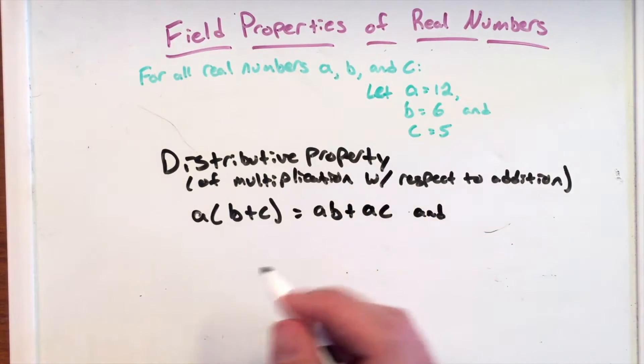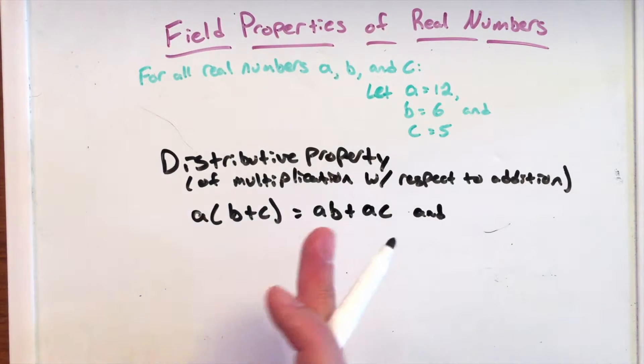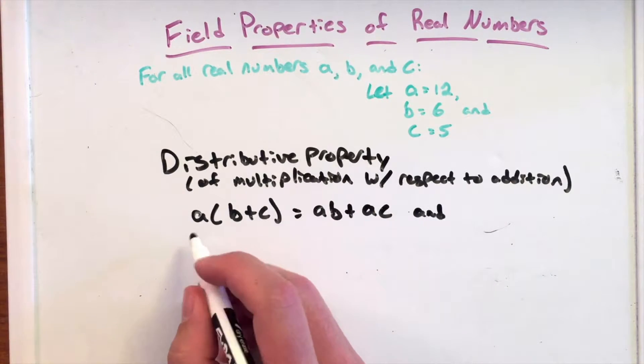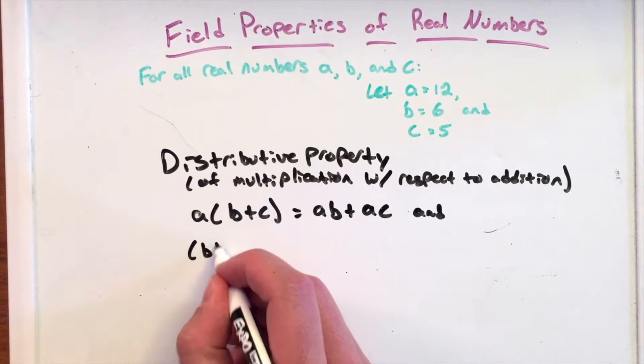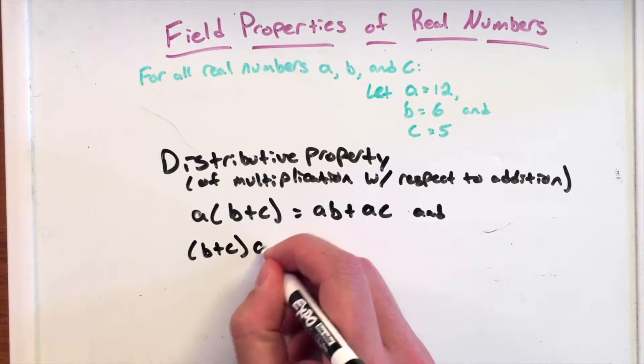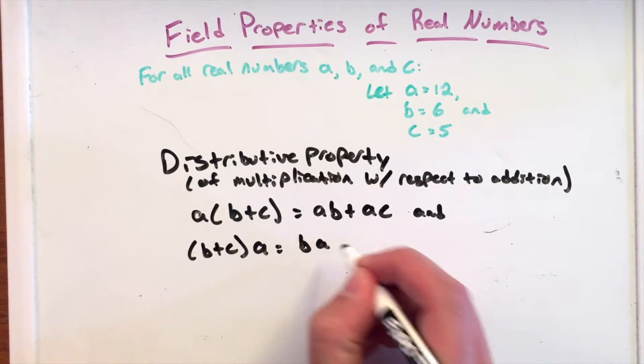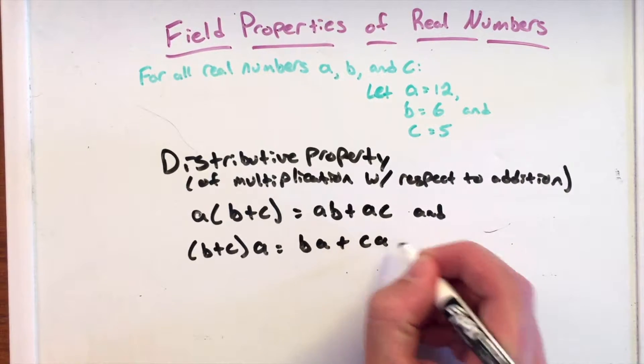The second part says that the parentheses can be on the other side of A in the multiplication, and B plus C times A is the same thing as B times A plus C times A.